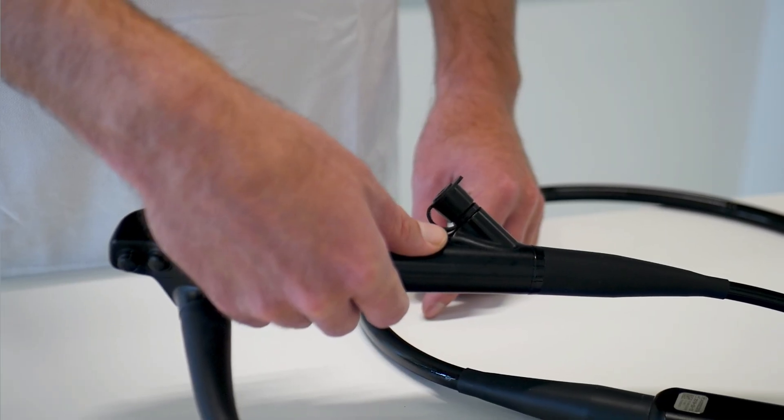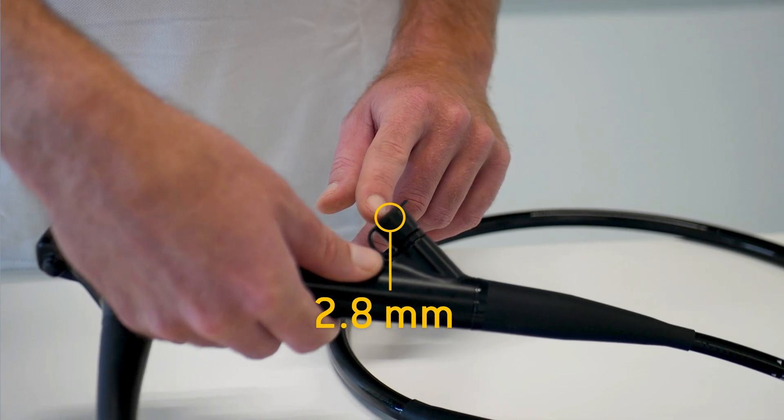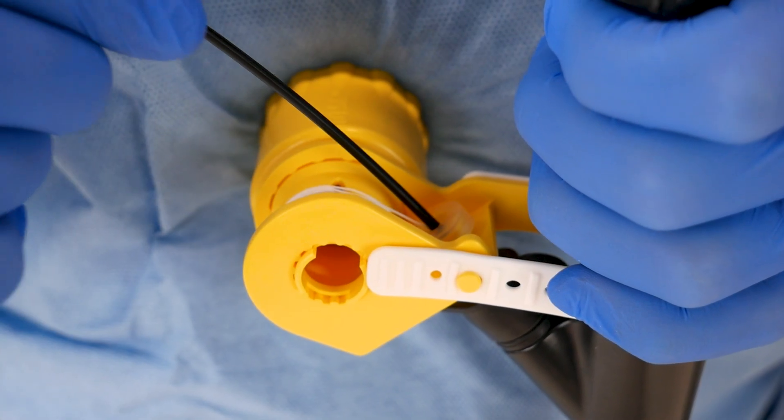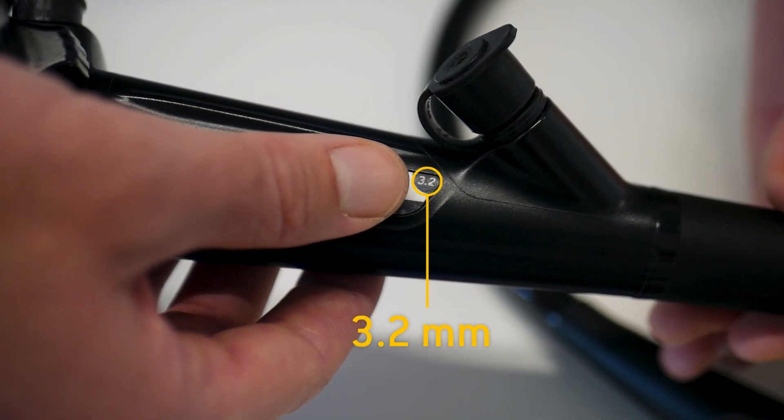The OTSC NEO system is designed for use with standard flexible endoscopes with a working channel diameter of at least 2.8 mm. If the system is used in combination with an accessory device, the working channel diameter must be at least 3.2 mm.